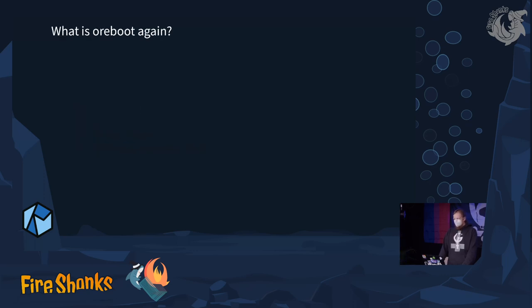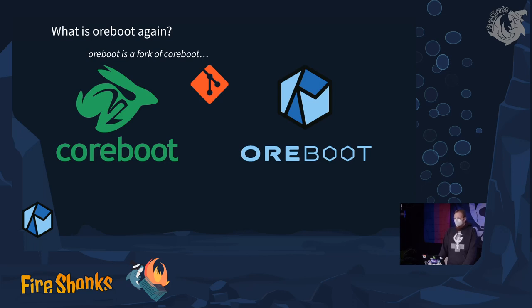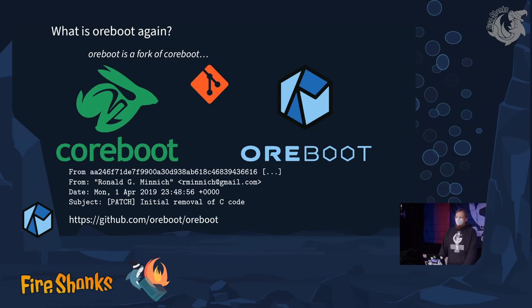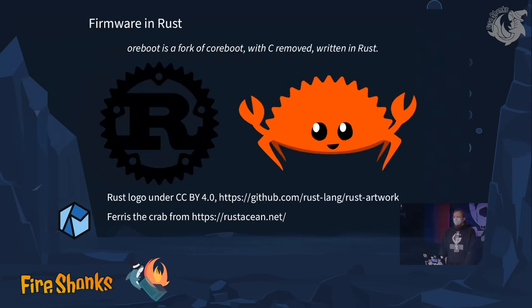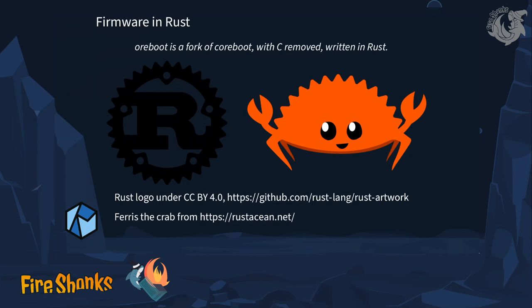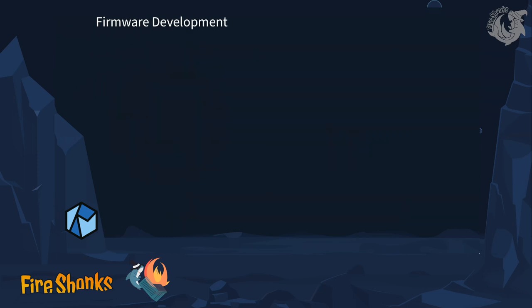ORBoot is a fork of coreboot — we used the git system to create a new repository. The first commit was removing all of the C code, and instead we are creating a new implementation in Rust, which is a fairly young programming language but is very well suited to low-level programming and writing system software. We use this to try to re-approach this entire firmware.